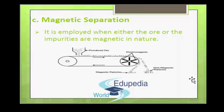The third process is magnetic separation. This method is employed when either the ore or the impurities are magnetic in nature. The powdered ore is dropped on a conveyor belt which moves over two rollers. When the ore particles pass over the magnetic roller, the magnetic particles are attracted by the magnetic field. The ore and gangue particles are separated into two different heaps — magnetic particles fall nearer to the magnetic roller while the non-magnetic gangue falls farther away. This method is useful for separating magnetite, chromite and pyrolusite from non-magnetic gangue.